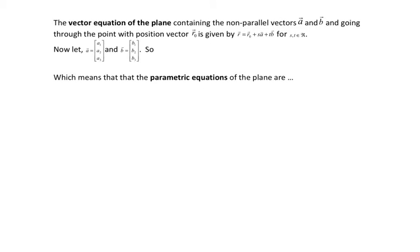This vector here can be thought of as a resultant of adding two vectors. So if we know a point on the plane, we can add multiples of these two vectors to get to any new point. That's where our vector equation of the plane comes from. If we have the vector equation of the plane, we take any random point and then add multiples of those two vectors — any combination of those two, positive or negative, will get us to any new point on the plane. If we expand this, we get the parametric equations of the plane.